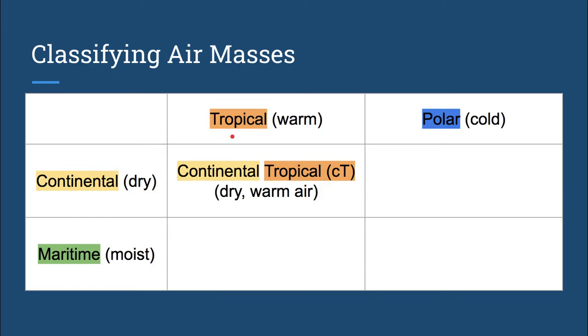So if I take continental and tropical in this first box, one type of air mass is continental tropical. On a map you'll see it represented by lowercase c, capital T. Now continental tropical gets the properties of these two words. Continental means dry, and tropical means warm. So continental tropical air is air that is dry and warm.